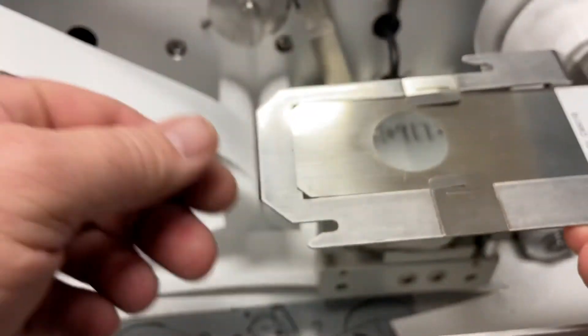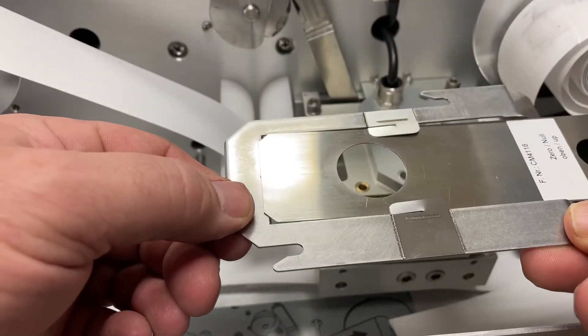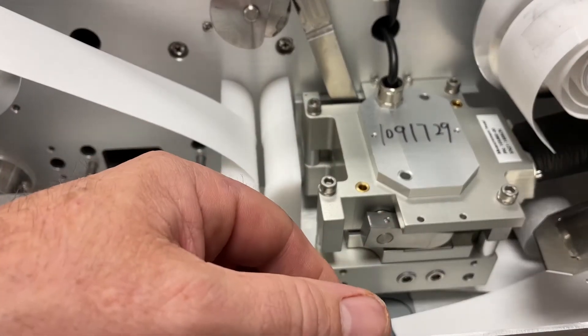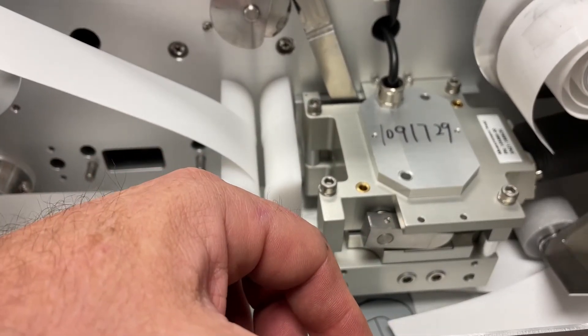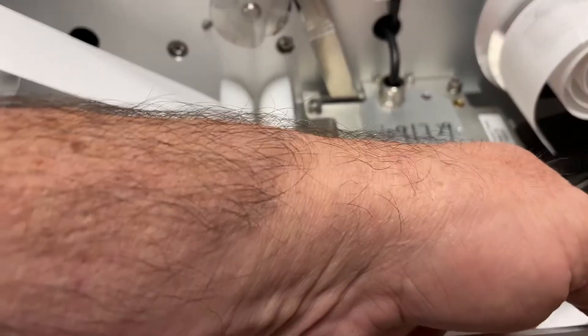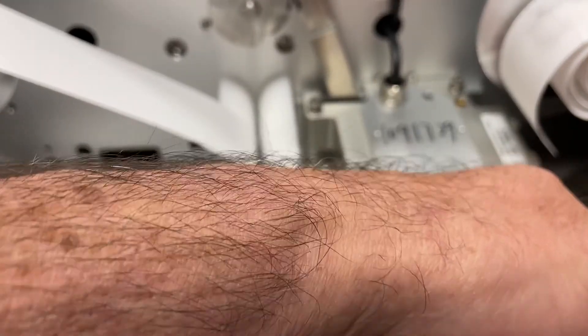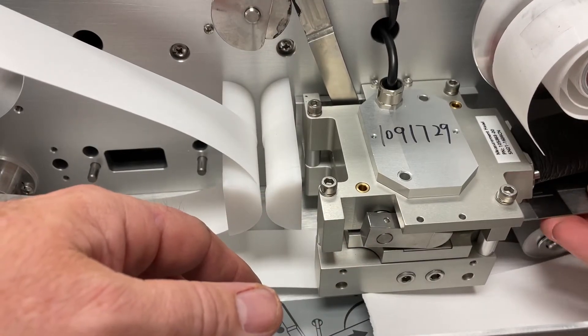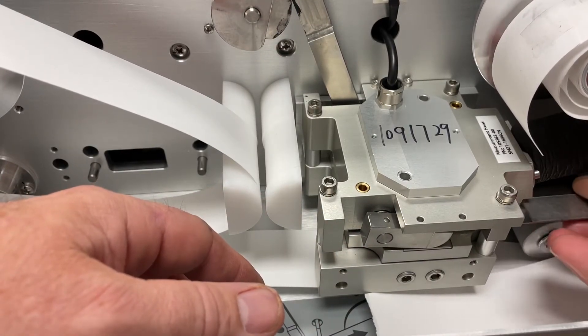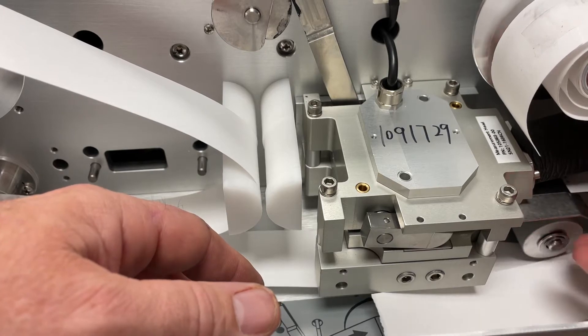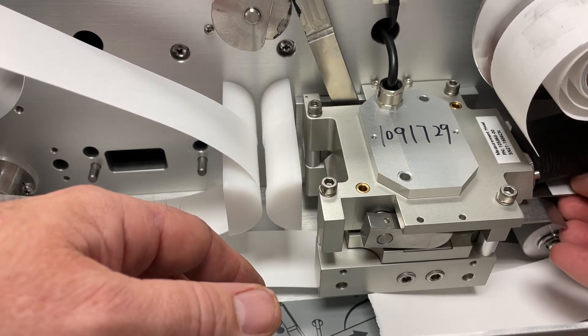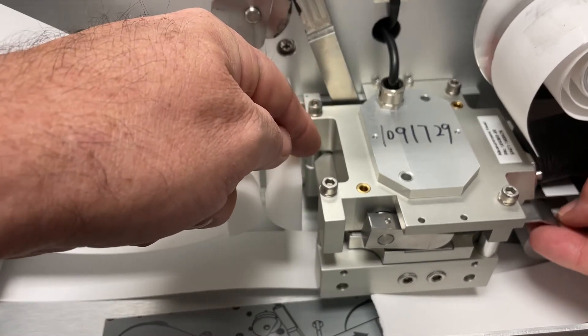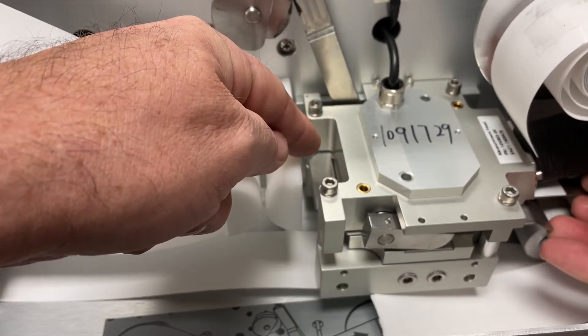Once that is out, we can take our foil that we've inserted into the plate. Now we're going to insert it into the head assembly, going in on the right side and just gently easing it in to the assembly, and it will stop.